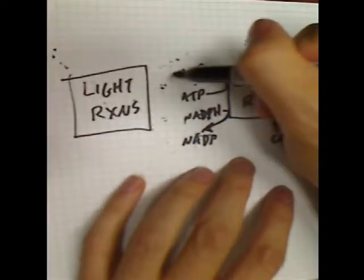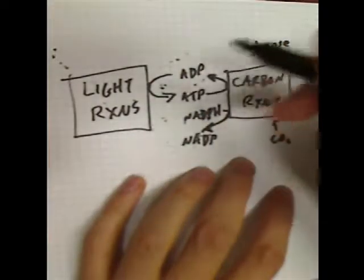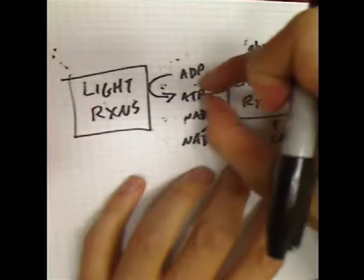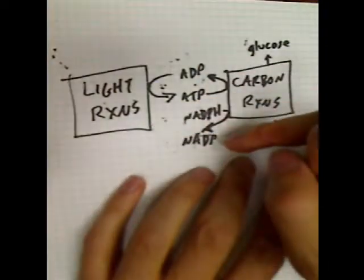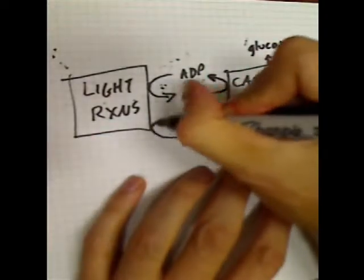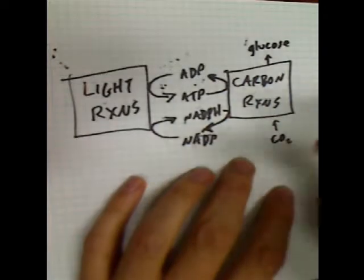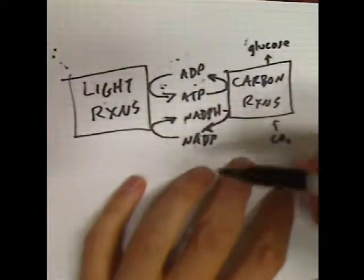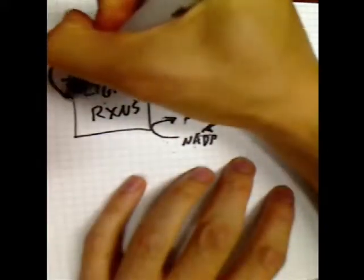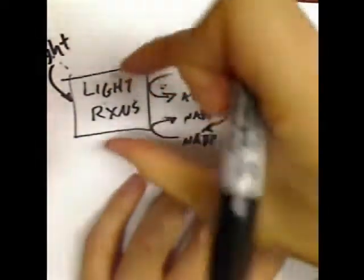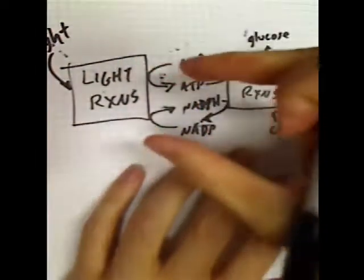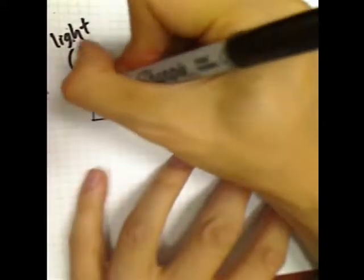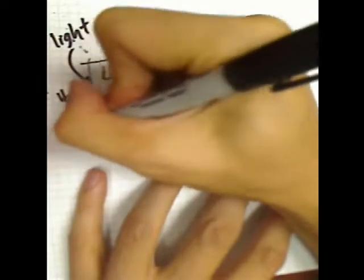The light reactions take low-energy ADP and form ATP through phosphorylation. They also reduce NADP to turn it into NADPH — reduction means adding an electron, so when NADP gains the extra electron, it becomes high-energy. Both phosphorylation and reduction are endergonic, so the energy comes from light. The light reactions take energy from light and convert it into the chemical form of ATP and NADPH. The light reactions are also what consume water and produce oxygen.